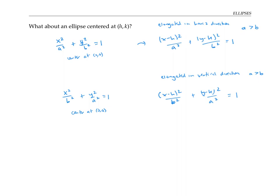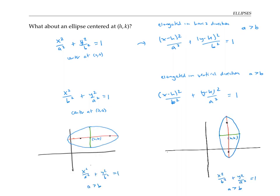I'll draw some pictures to illustrate. With some thought we can label the key points. For a horizontally elongated ellipse centered at (h, k): the vertices are at (h + a, k) and (h − a, k); the minor axis endpoints are at (h, k + b) and (h, k − b); and the foci are at (h + c, k) and (h − c, k).